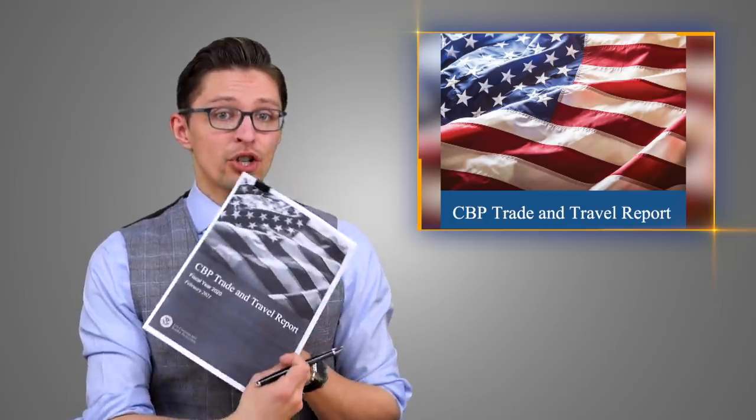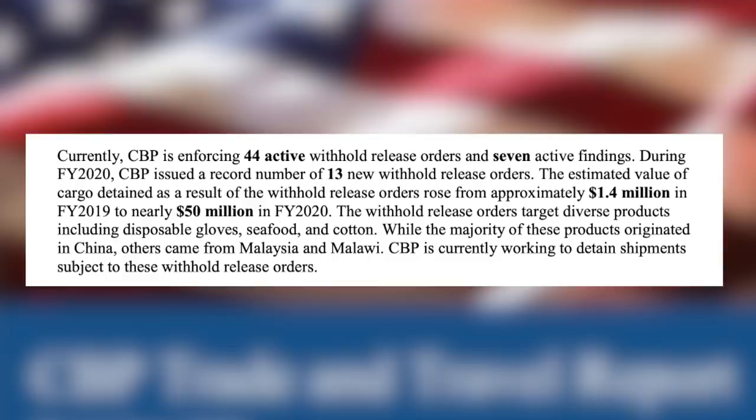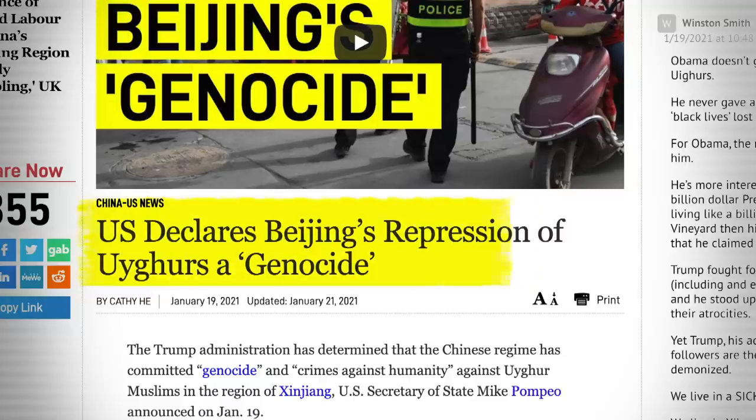This report was not limited to just COVID-related products. It also mentioned that customs officials issued a record number of withhold orders banning imports of products made using forced labor. Most of these targeted products, things like disposable gloves, seafood, and cotton, originated from China. Specifically, about a month ago, the Customs and Border Patrol agency issued a new withhold order banning all imports of cotton, apparel, textiles, and tomato products from China's Xinjiang region.